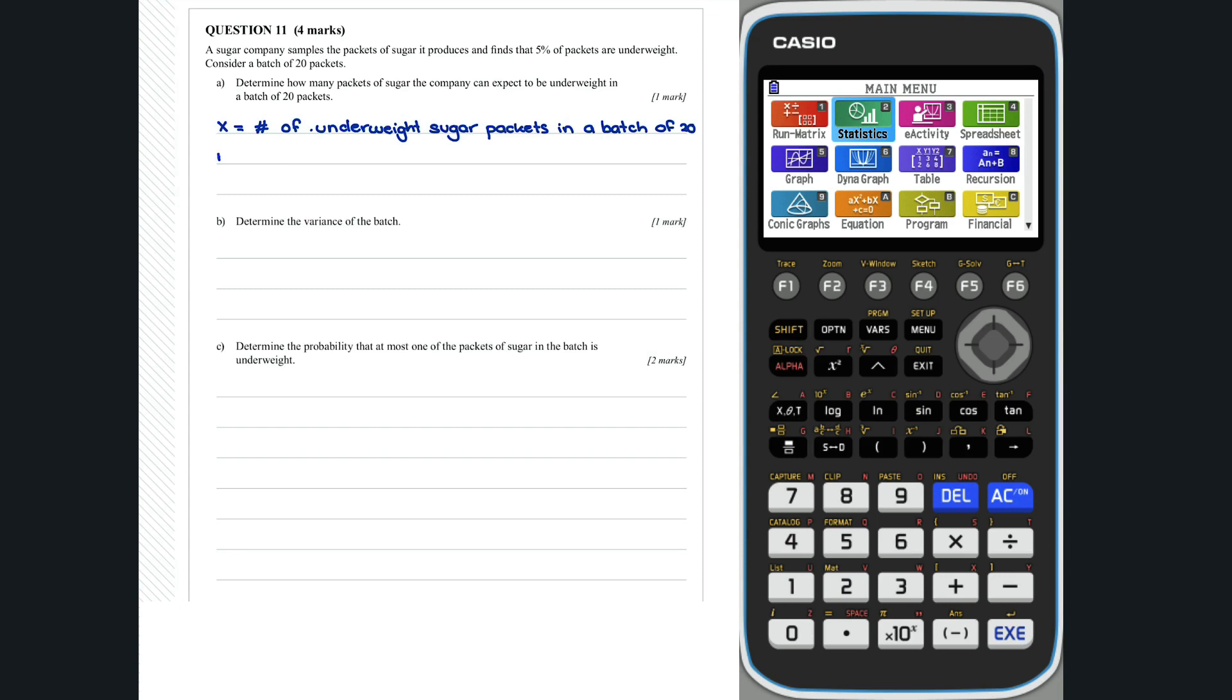We are told that n is equal to 20 and p is equal to 0.05. So x is binomially distributed with the number of trials 20 and the probability 0.05.